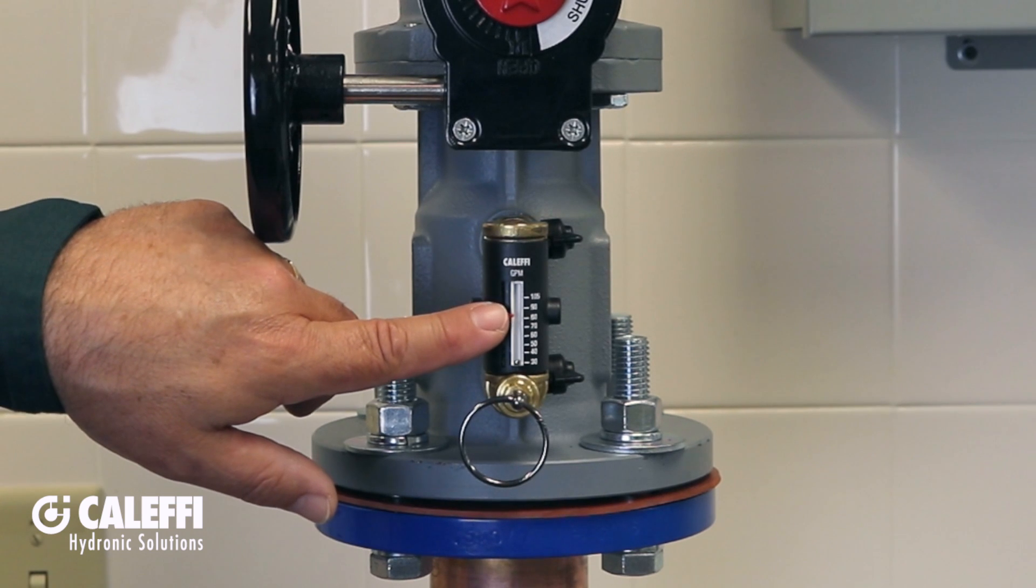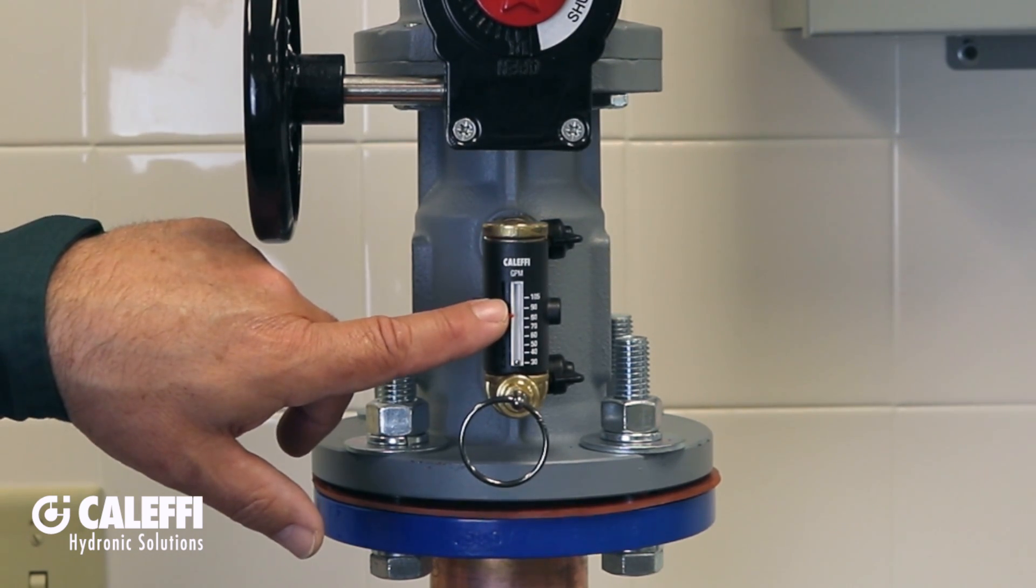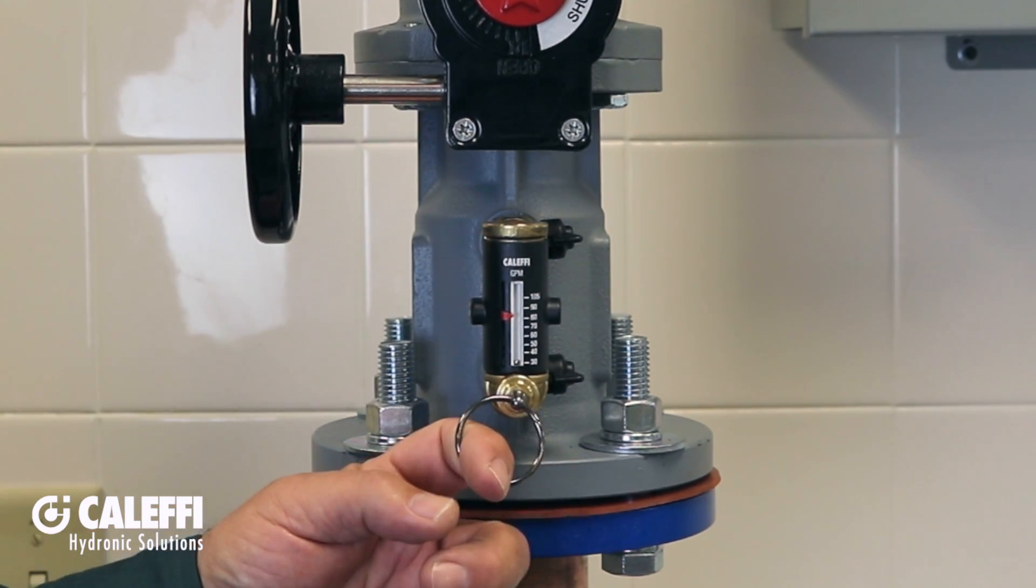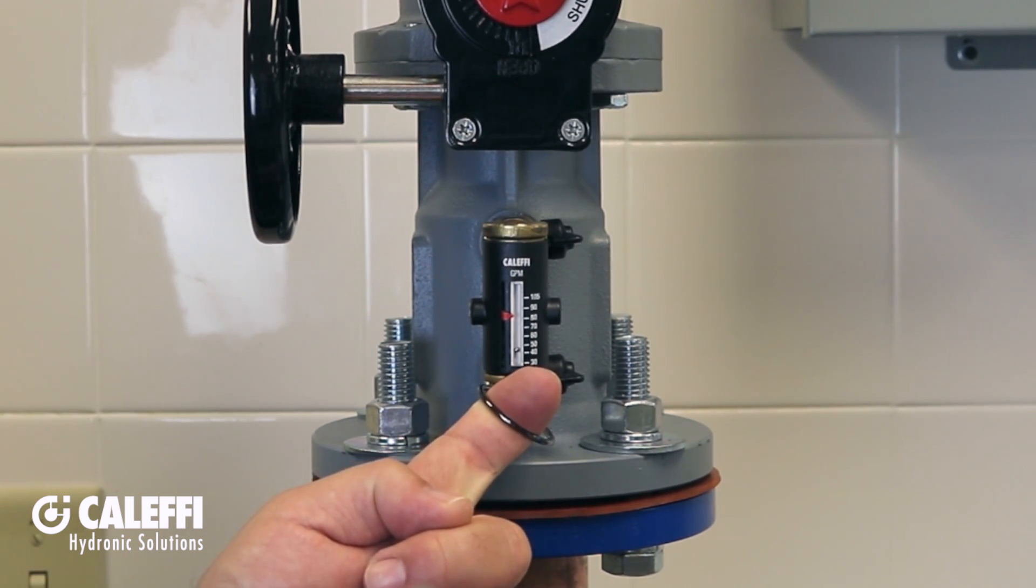This little red sliding design flow rate pointer allows you to set your design flow rate on the scale. To read the flow when you're balancing or at any other time that you want to check the flow rate, simply pull this ring when the system pumps are running.